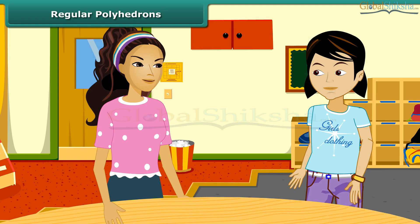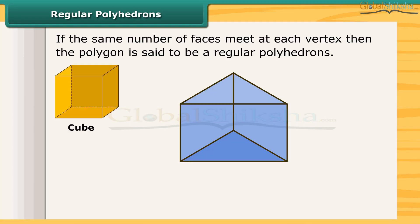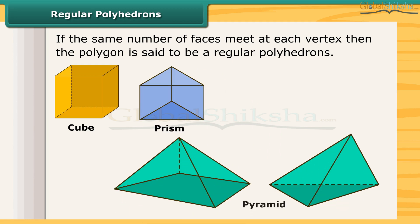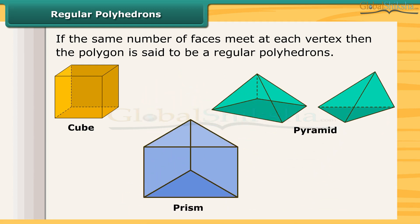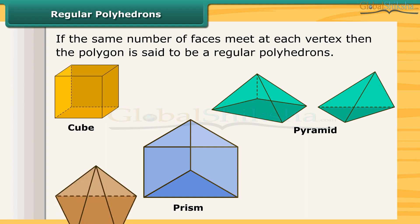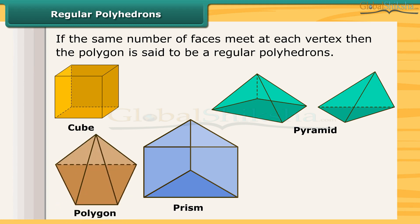We have two important members of the polyhedron family: prisms and pyramids. A prism is a polyhedron whose base and top are congruent polygons and whose lateral faces are parallelograms in shape. A pyramid is a polyhedron whose base is a polygon of any number of sides and whose lateral faces are triangles with a common vertex. If you join all the corners of a polygon to a point not in its plane, you get a model for a pyramid.